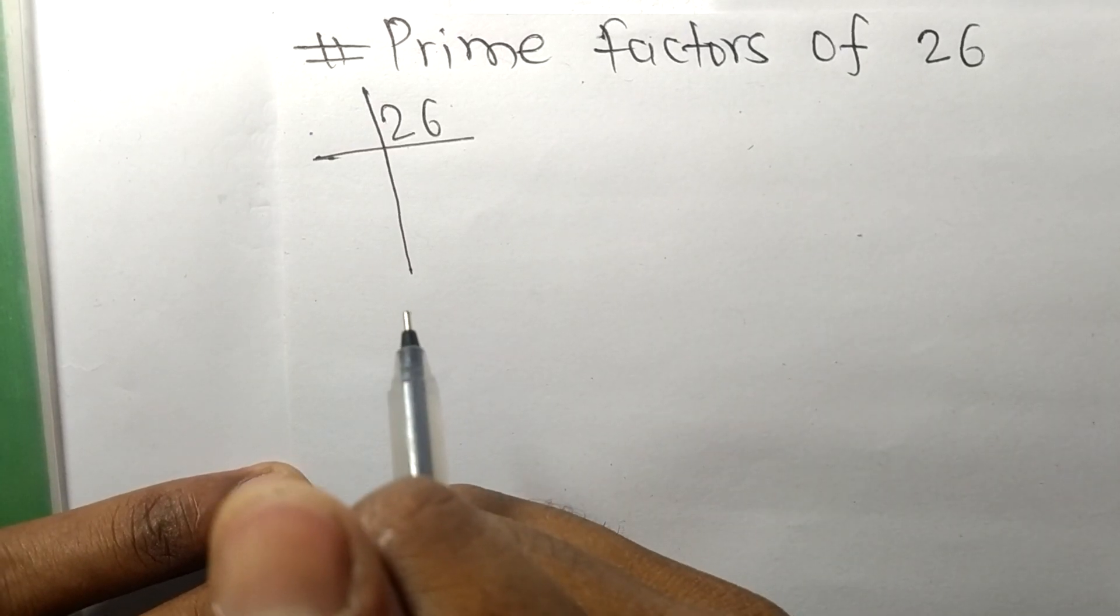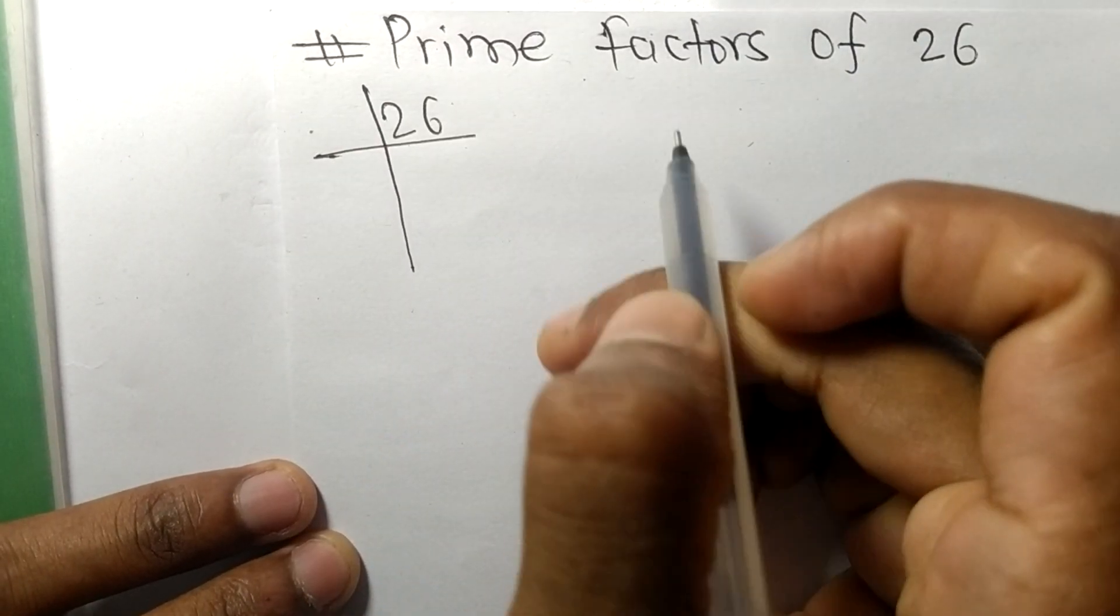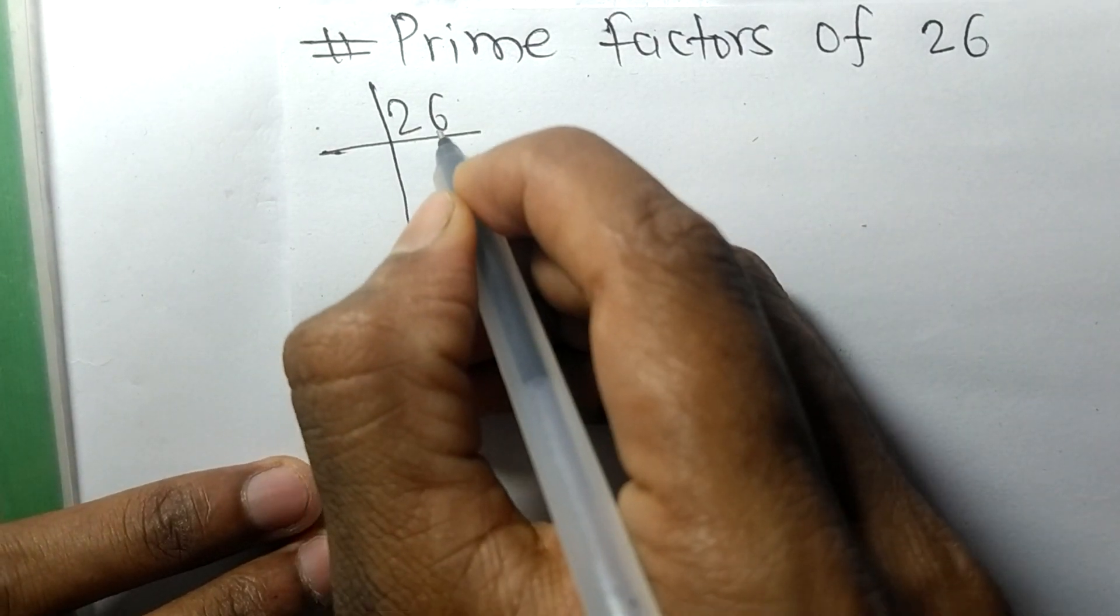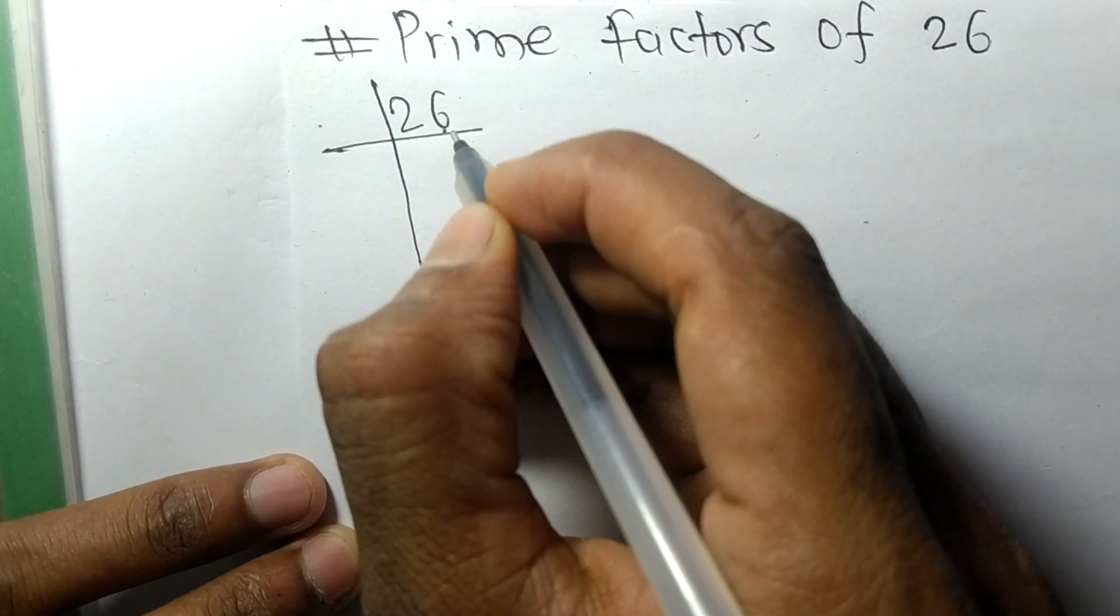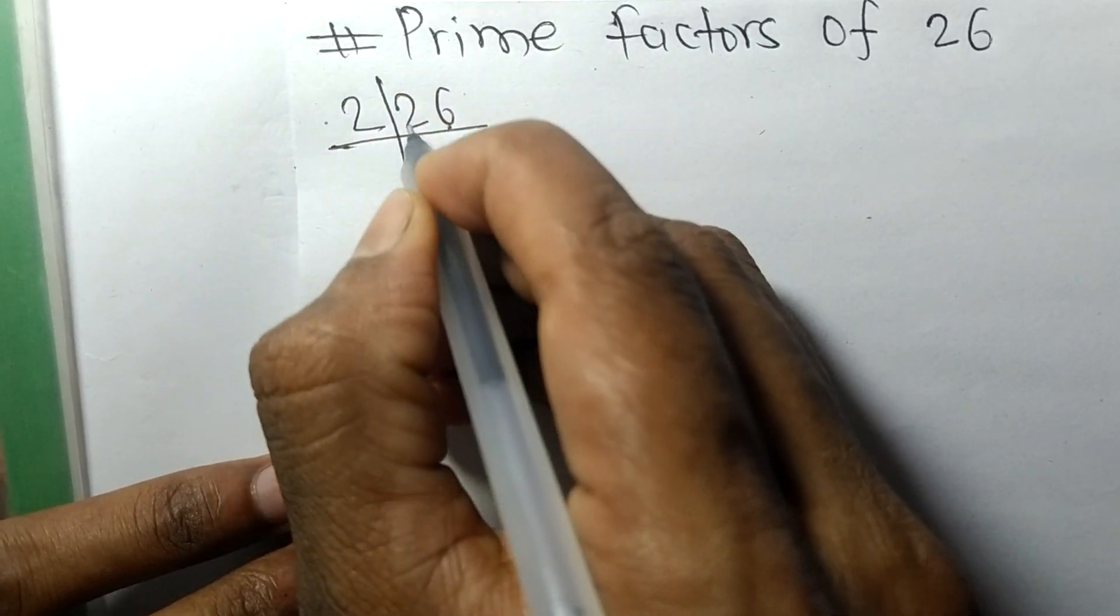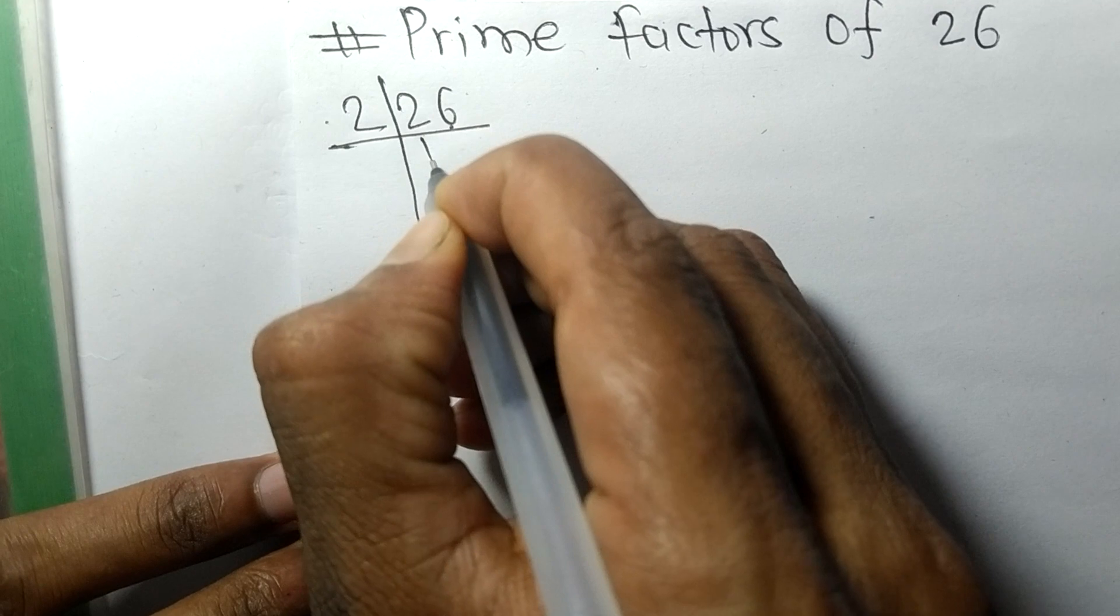Today in this video we will learn to find the prime factors of 26. It contains 6, which is an even number, so it is divisible by 2. When we divide: 2 divided by 2 gives 1, and 6 divided by 2 gives 3.